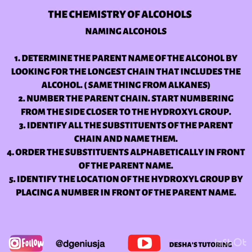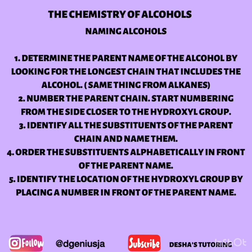The International Union of Pure and Applied Chemistry (IUPAC) is the naming scheme we use to name alcohols. These are the steps: first, determine the parent name by looking for the longest chain that includes the alcohol group. Then number the parent chain starting from the side closer to the hydroxyl group. Identify all substituents and name them. Order substituents alphabetically in front of the parent name, and identify the location of the hydroxyl group by placing a number in front of the parent name.